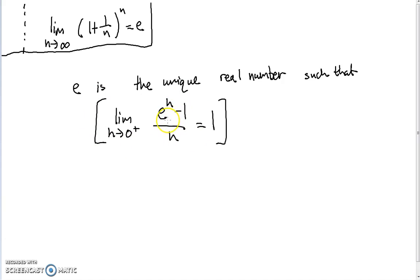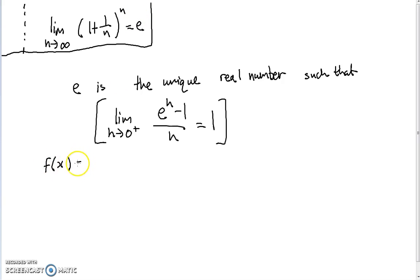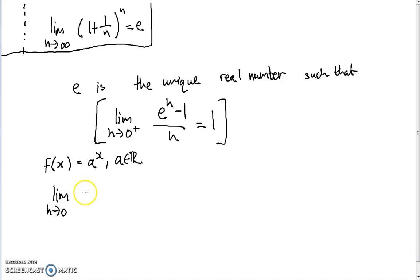This will also seem obscure at the moment, so I will outline the motivation for this. It comes down to trying to differentiate exponential functions. An exponential function looks like f(x) = A to the power of x, where A is some real number. Trying to differentiate this from first principles, if we're trying to work out the derivative of f(x), then we need to take the limit as H approaches 0 of (A to the power of x+H minus A to the power of x) over H.